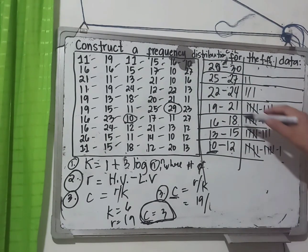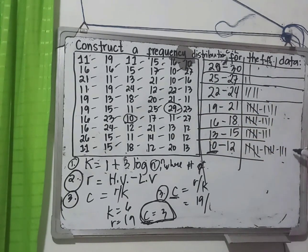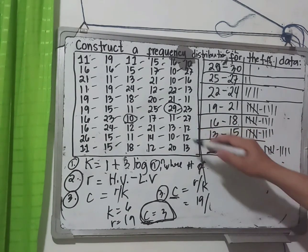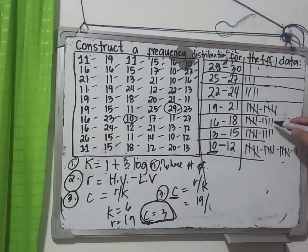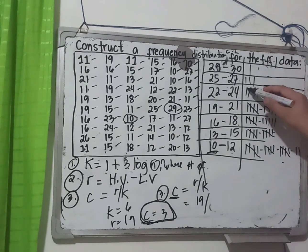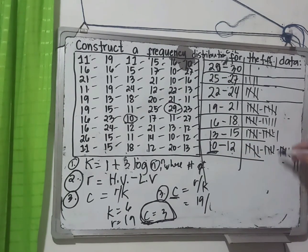Continuing: 16 to 16–18, 10 to 10–12, second 10 to 10–12, 22 to 22–24, 21 to 19–21, 21 to 19–21, 29 to 25–27 range, 11 to 10–12, 13 to 13–15, 10 to 10–12, 27 to 25–27, 16 to 16–18, 13 to 13–15, 11 to 10–12, 23 to 22–24, 27 to 25–27, 12 to 10–12, 12 to 10–12, 12 again to 10–12, 13 to 13–15.